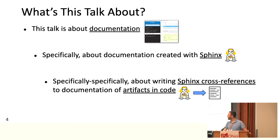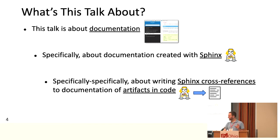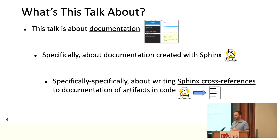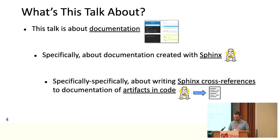So what am I talking about? I'm ultimately talking about documentation generally, but I'm going to drill down and specifically talk about Sphinx — the documentation generator — and specifically about the nuts and bolts of writing cross-references in Sphinx to code artifacts. This is also relevant to other documentation artifacts like the pages themselves and bookmarks within the pages. While it's fairly straightforward to do, if you don't know what information you're looking for and where to find it, it can be quite frustrating. This is going to be a very drilled-in, nuts-and-bolts talk.